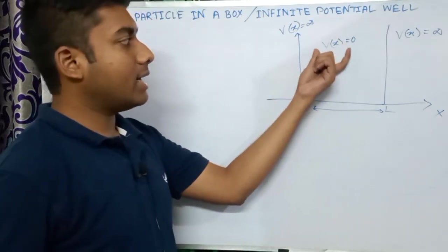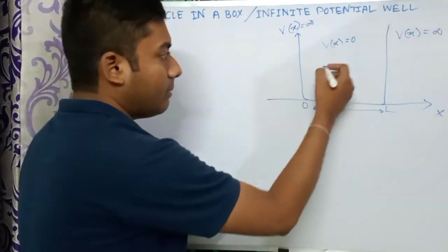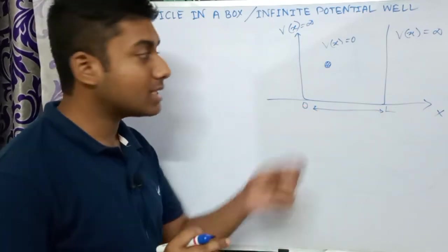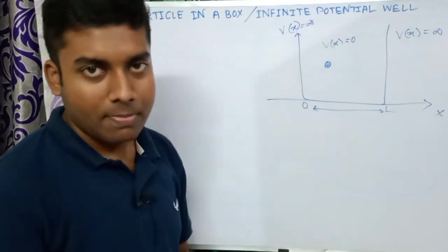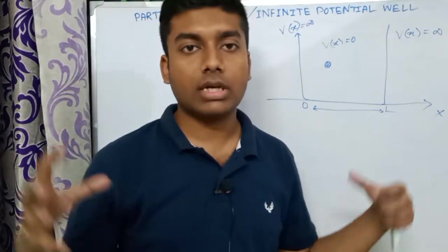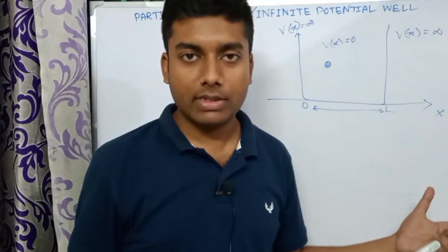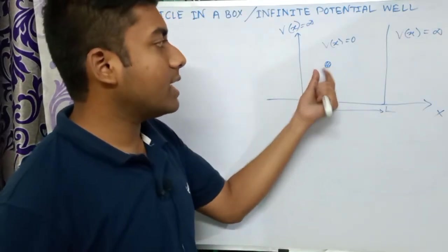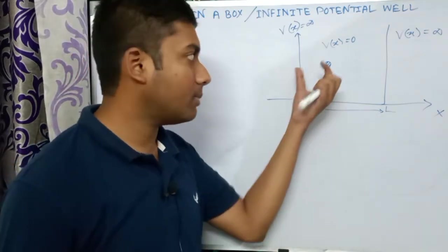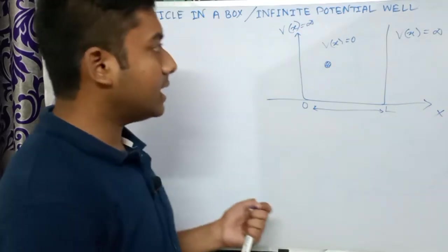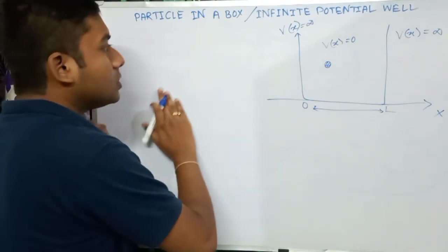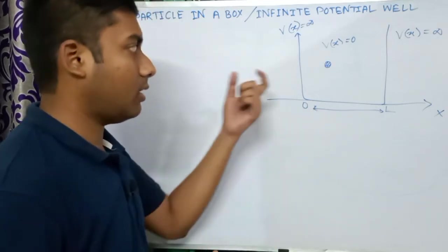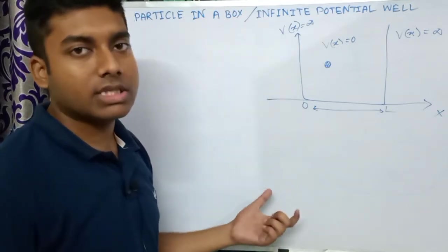In this case, since the potential is zero inside the well, a quantum particle in region 0 to L is nothing but a free particle. You can imagine the potential as a restriction on a particle. If a particle is completely restricted, it cannot move. But if a particle experiences no potential, meaning there is no interaction influencing the particle, then the particle behaves as a free particle. We use the Schrödinger wave equation to find all the necessary details of the states and energies of that particle.